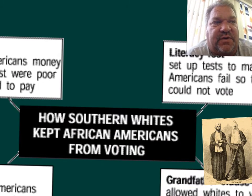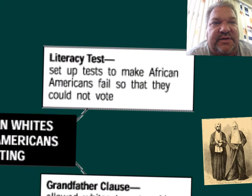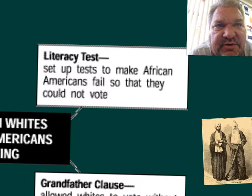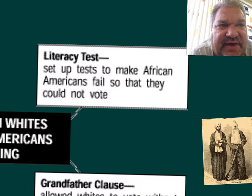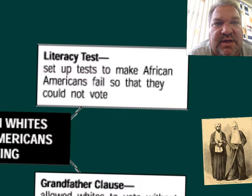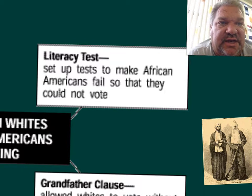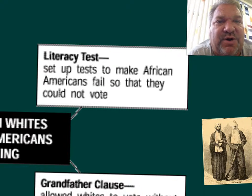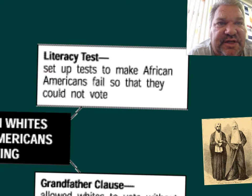The second way they kept them from voting was a literacy test. Literacy means you're able to read or write. They set up a test for African Americans that was designed to fail, so they could not vote. They had to read a very difficult part of the Constitution to pass the literacy test. Of course, they couldn't read — they weren't allowed to read, and they'd be punished if caught with books when they were slaves on plantations. So they wouldn't be able to pass, and they wouldn't be able to vote.